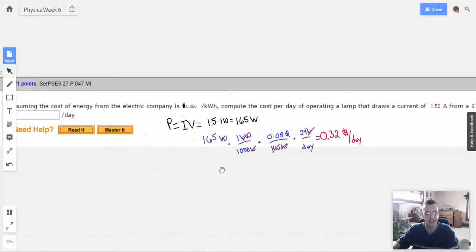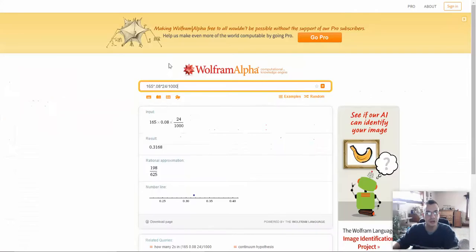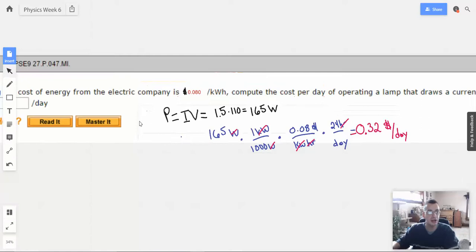I guess most people don't actually leave their light on all day. So it's 165, 0.08 times 24 divided by 1,000. Yep. I'm going to say that's right.